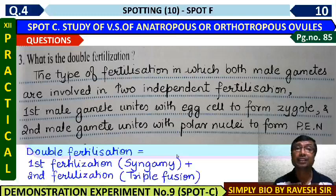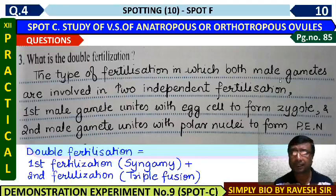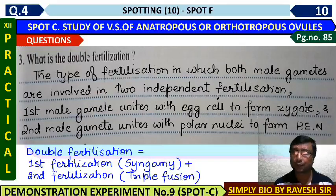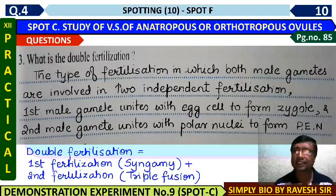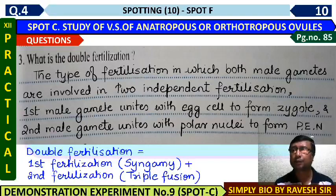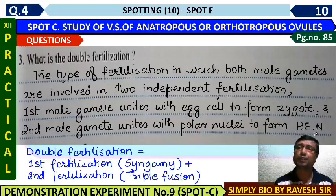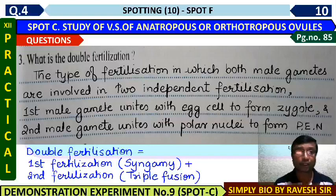What is double fertilization? It is a characteristic feature of angiosperms. The pollen tube carries two male gametes, which are involved in two separate fertilizations. The first male gamete unites with the egg cell — this is called syngamy — forming the zygote. The second male gamete unites with the polar nuclei — this is called triple fusion — forming the Primary Endosperm Nucleus (PEN). The zygote later develops into the embryo, and the PEN develops into the endosperm.